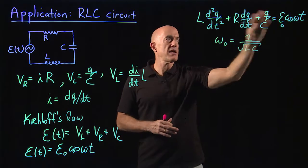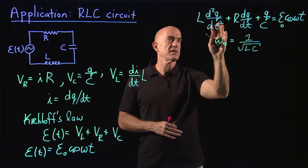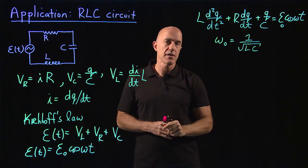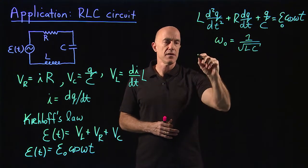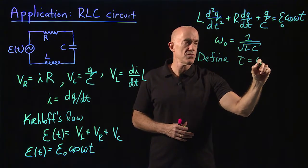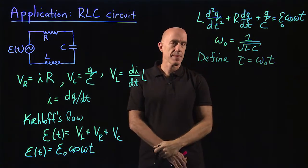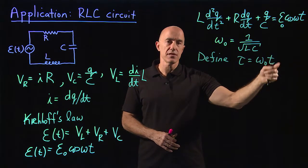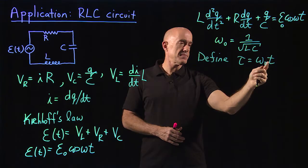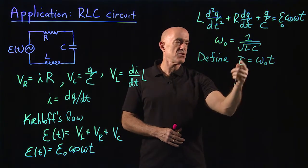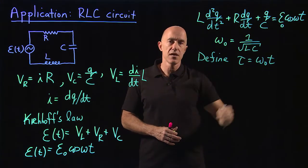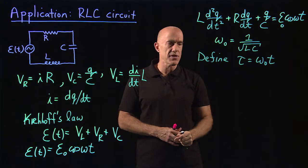So we can non-dimensionalize this equation to give us an equation with fewer parameters. We can use this ω₀ which has units of 1 over time to non-dimensionalize time. So we can define the non-dimensional time τ equals to ω₀ times t. Then τ is unitless. T has units of whatever units of time. But now we've non-dimensionalized it. So when τ goes from 0 to 1, t is going from 0 to 1 over ω₀. So in some sense we've chosen 1 over ω₀ as our unit of time.